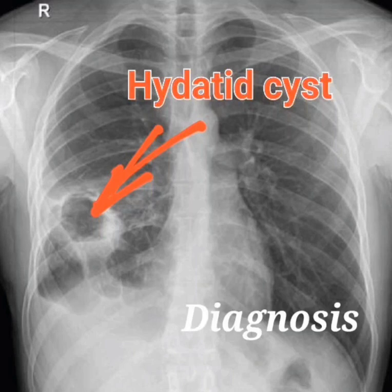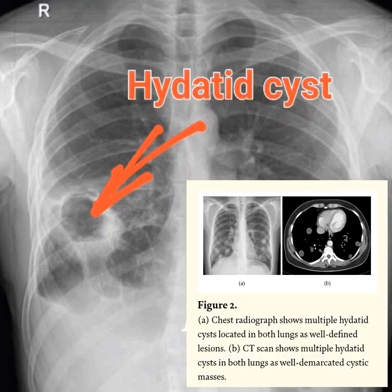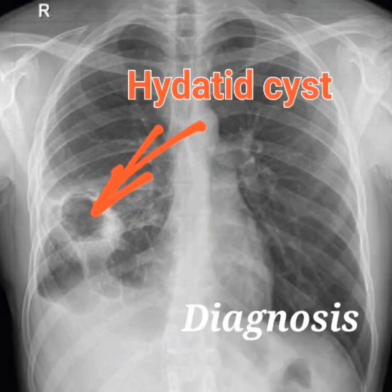The diagnosis of a hydatid cyst of the lung is usually made with a combination of imaging tests and serological tests. Imaging tests such as chest x-ray, computed tomography (CT scan), and magnetic resonance imaging (MRI) can show the presence and size of the cyst. Serological tests can detect antibodies to the parasite in the blood.